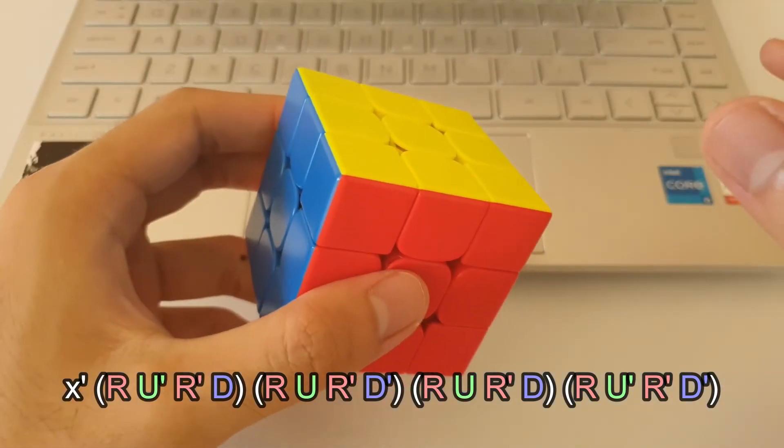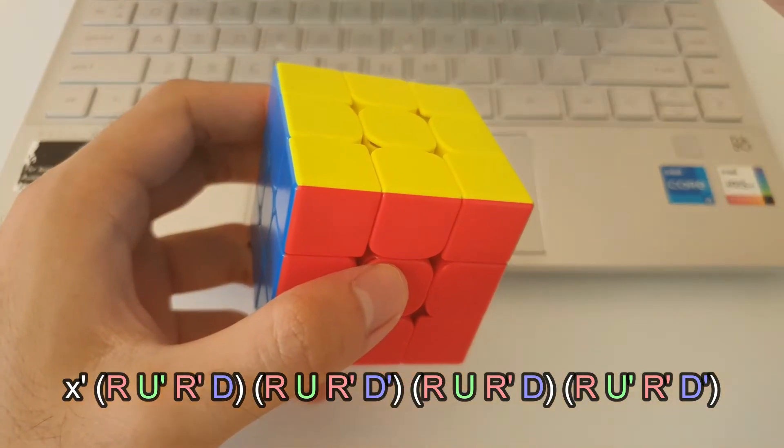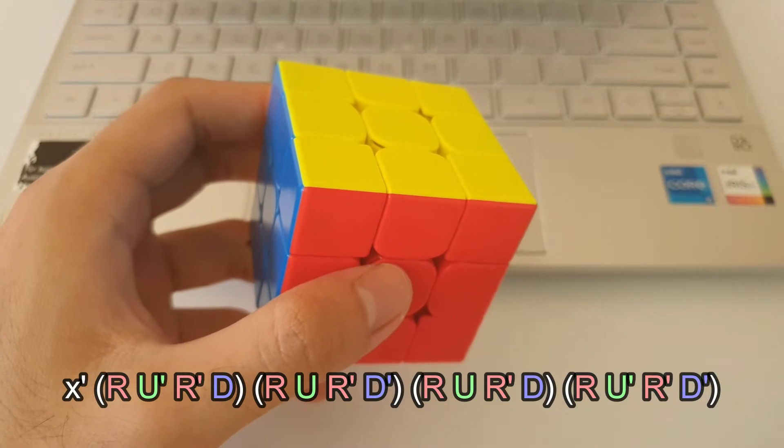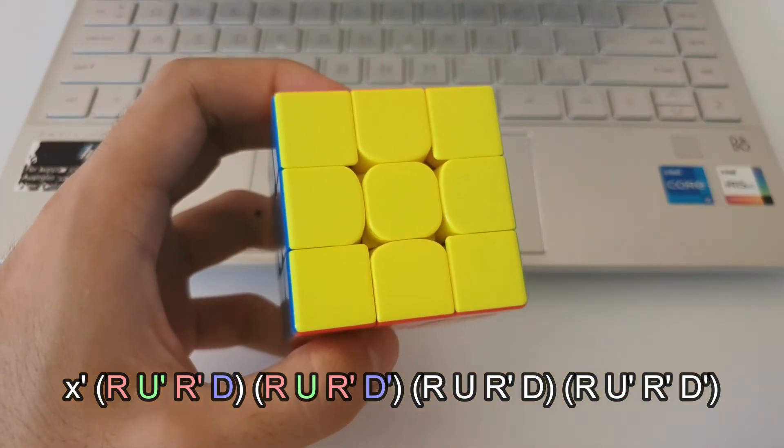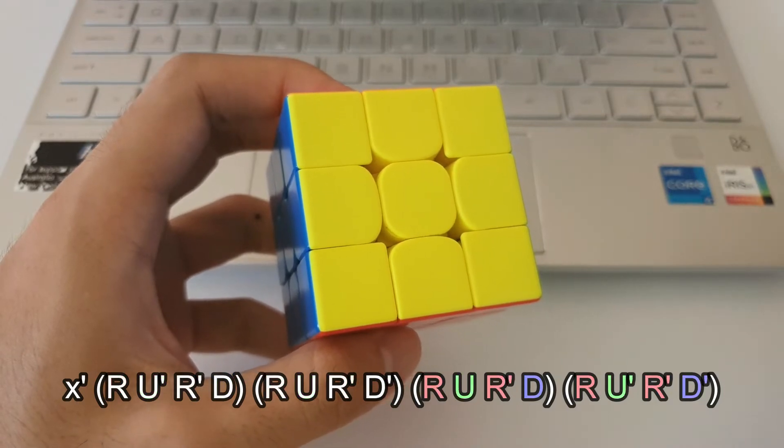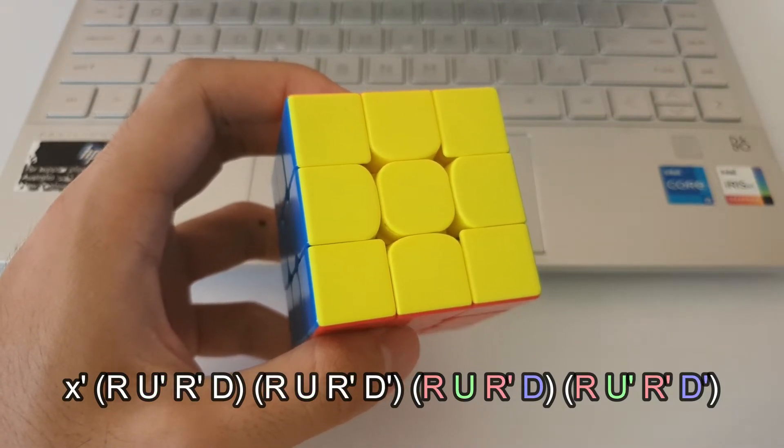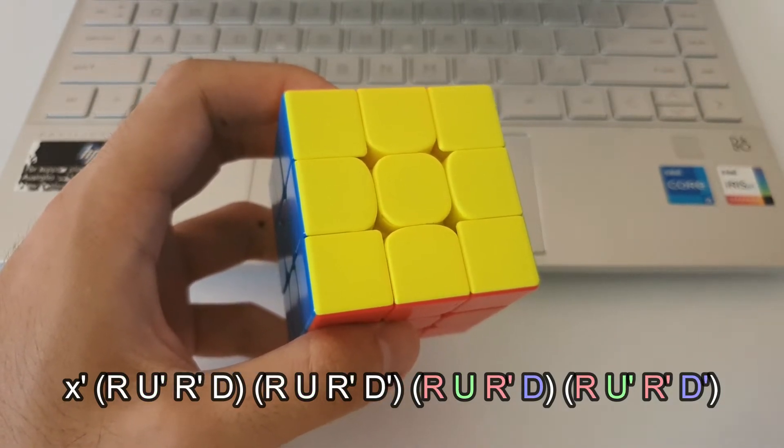And so that's pretty much how the algorithm goes. It's alternating R moves along with alternating U and D moves. The first half of the algorithm, the U and D moves go in the same direction. The second half of the algorithm, the U and D moves go in different directions.